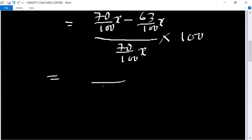After taking LCM, 7x upon 70 upon 100x, multiplied by 100. The 100s cancel and the x's cancel.